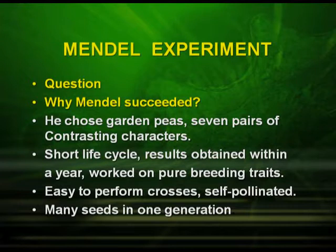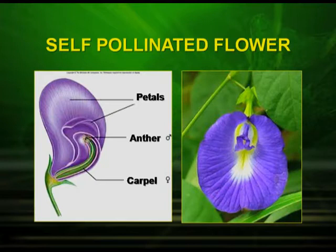Many seeds are produced in one generation. The pea flower is self-pollinated because the male part and the female part — the stamen and the carpel — are enclosed within the flower. So there is no chance of cross pollination.